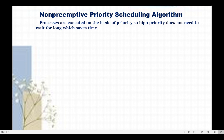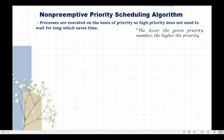In the following example, the lesser the number of the given priority would mean the higher the priority. In case there are two or more processes having the same priority, we are going to apply the concept of first come first serve. In order to compute the average turnaround time, we need first to compute the turnaround time of each process. And in order to compute the average waiting time, we need first to compute the waiting time of each process. In the computation of the turnaround time, we need to determine first the completion time of each process.